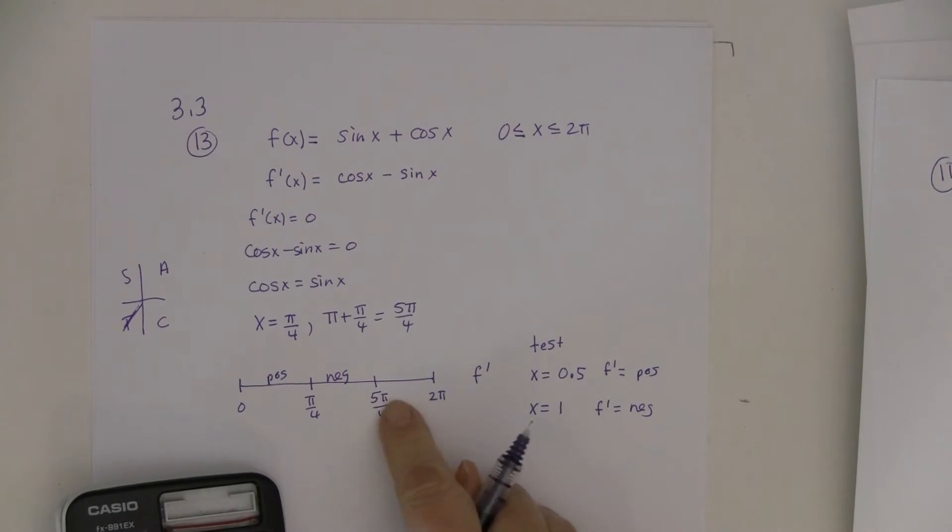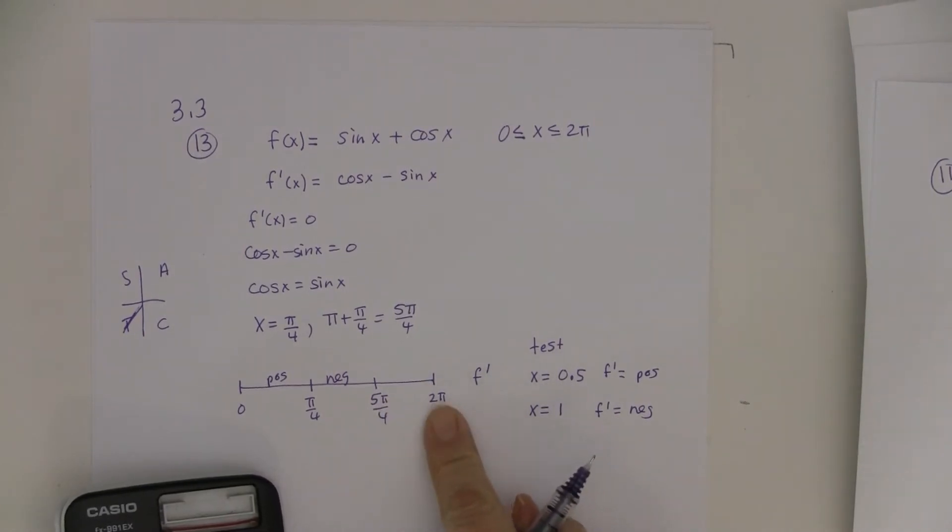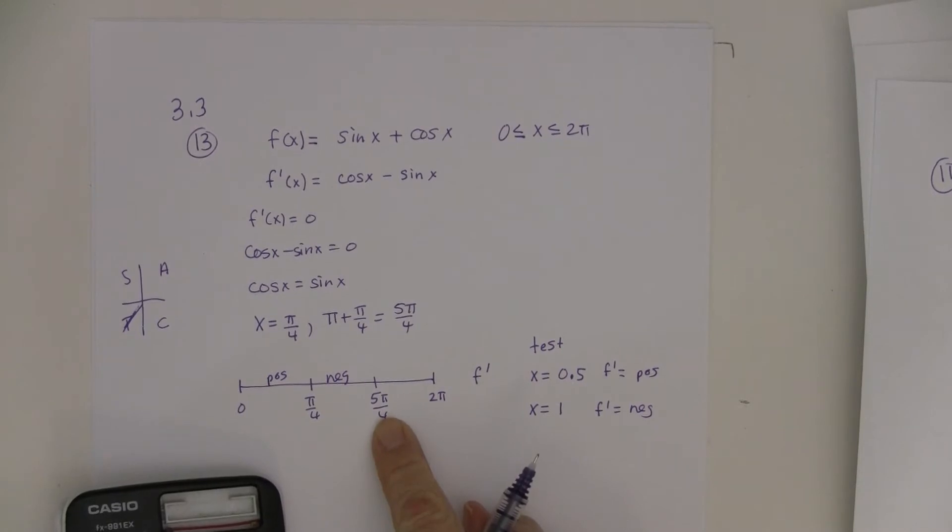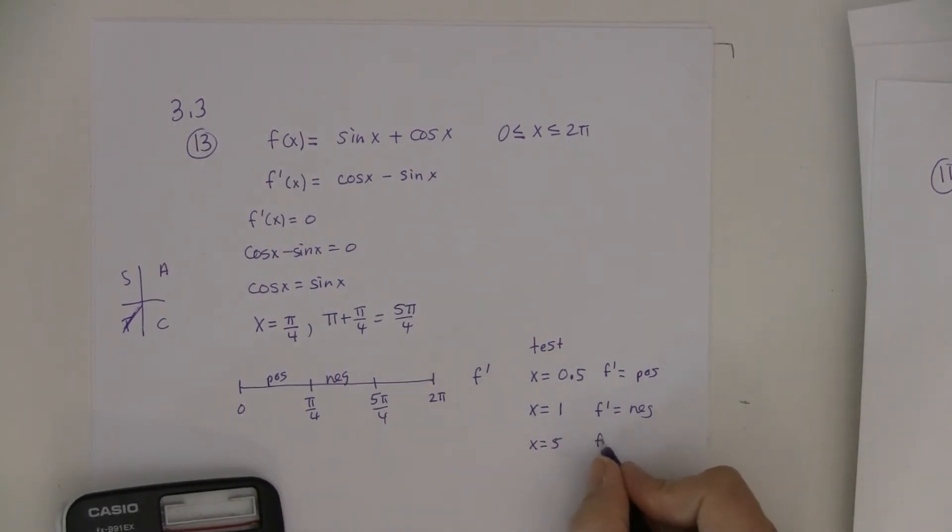And then you could test something in this region over here. That's 6.28, right? And we said this was bigger than 3.14. So maybe I'll test 5 so that I don't have to really figure out what this is just because I know that it'll for sure be over there.